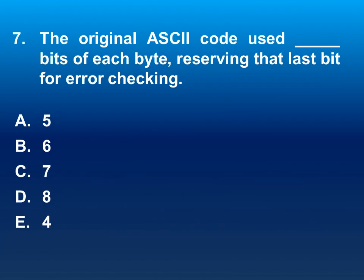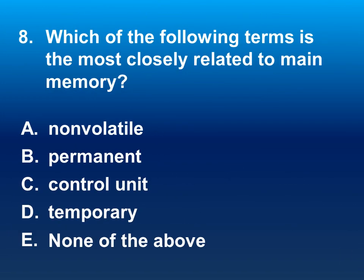Next question: the original ASCII code used how many bits of each byte, reserving the last bit for error checking? Guess your answer. The correct answer is 7.